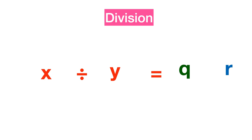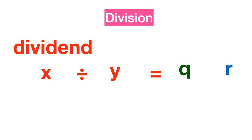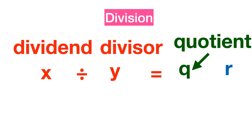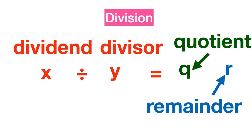In division, we divide x by y and want to know how many times division is performed. The division ends when the dividend reaches 0 or becomes smaller than the divisor. The number being divided is called the dividend; the number that divides is the divisor. The result is the quotient, and the amount left over is the remainder. The quotient is how many times division completes fully, while the remainder is what's left that doesn't go evenly into the divisor.